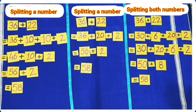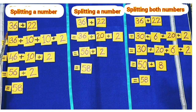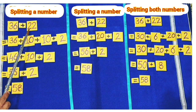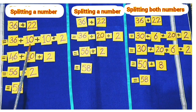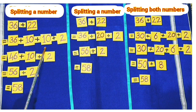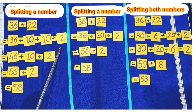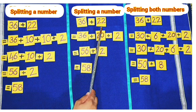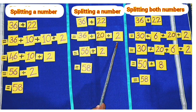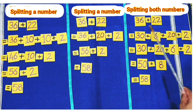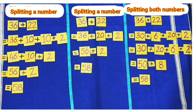Today you have learnt to add 2-digit numbers with 2-digit numbers. In the first method we split 22 as 10, 10, and 2. In the second method we split 22 as 20 and 2. In the third method, you split both numbers.